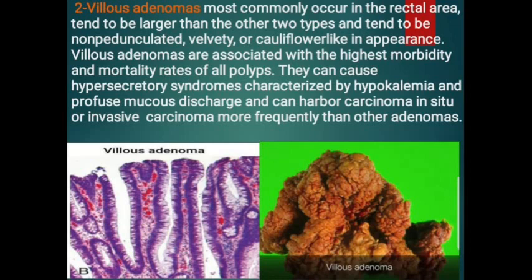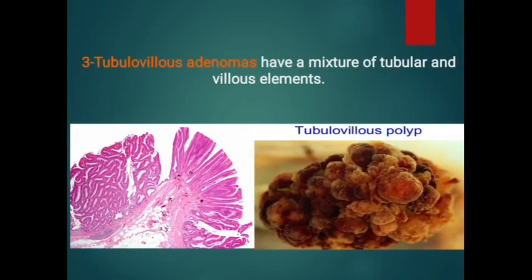The third type is tubulovillous adenoma, which has a mixture of tubular and villous components. The gross appearance is commonly sessile, and microscopically we can see mixed finger-like projections and tubules — hence the name tubulovillous adenoma. Finally, adenomatous polyps with high-grade dysplasia should be removed because there is a high risk of progression to carcinoma if not removed. Thank you, and now my colleague Zainab will take us to the end of our seminar.